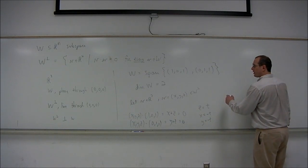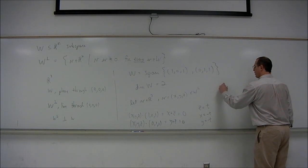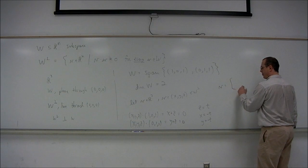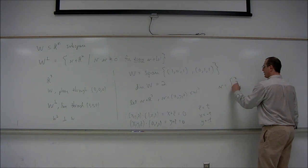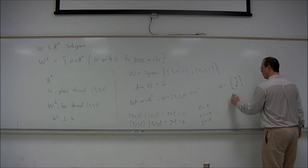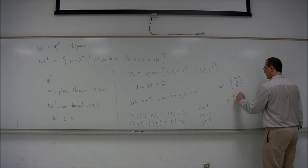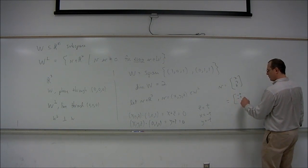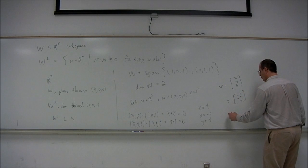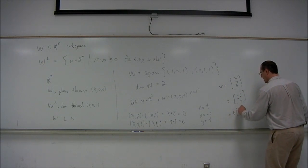In other words, the vector V in R^3 would have the form (X, Y, Z) which equals (−T, −T, T), or T times (−1, −1, 1).